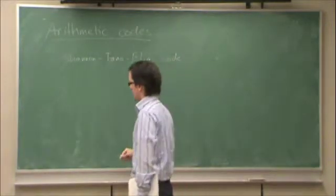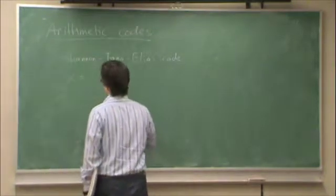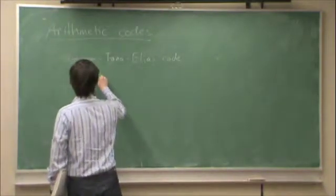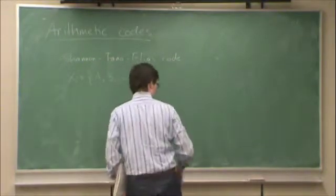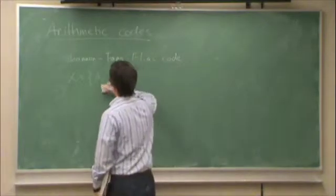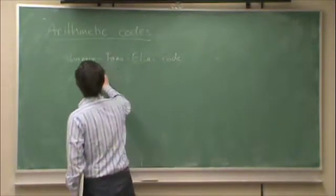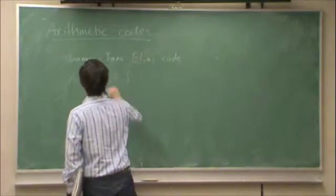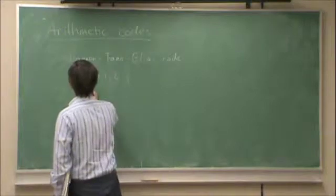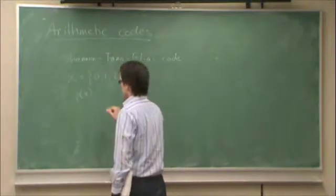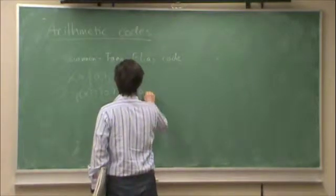For example, if I have a source X with three letters, because we're talking about the cumulative distribution function, it makes sense to talk about these as integers, not letters. I have some probability PX over these, let's say it's 0.7, 0.2, 0.1.